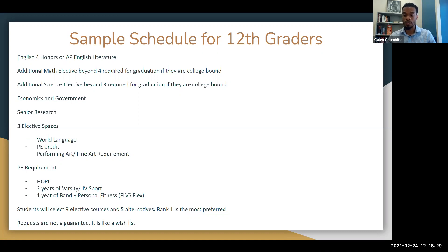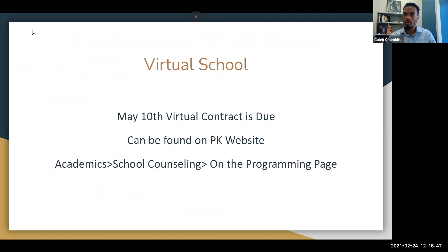A final note: please keep in mind that ranking number one is your most preferred elective and number eight is your least preferred but still willing to take. These are requests, not guarantees — imagine it like a wish list. The last piece we're going to cover is virtual school.